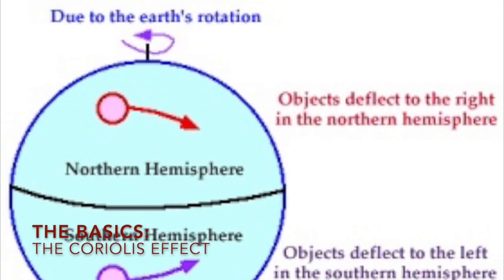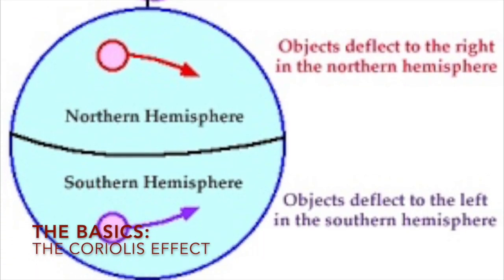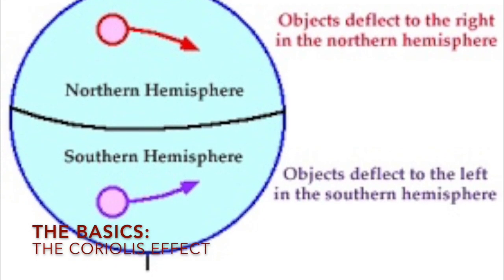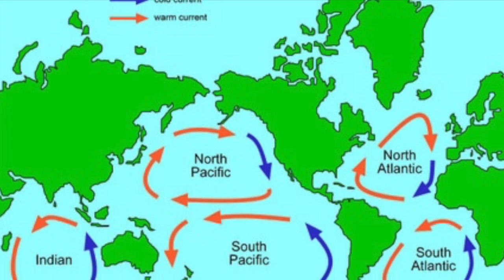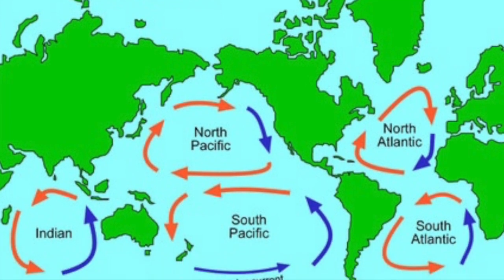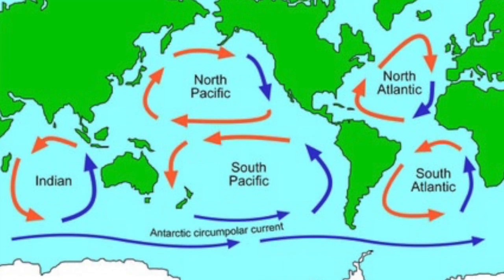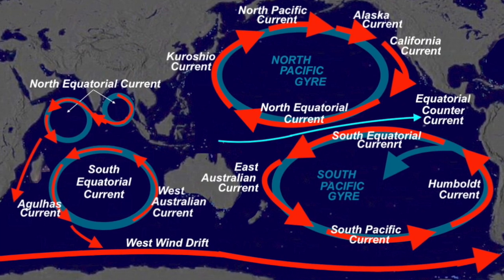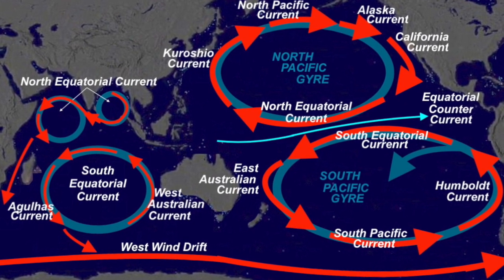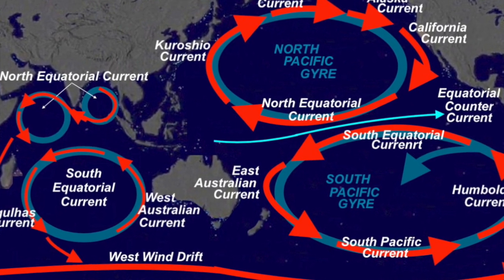The Coriolis effect deflects objects moving on the earth that aren't firmly secured to the ground. This causes ocean currents moving in the northern hemisphere to move clockwise and ocean currents in the southern hemisphere to move counterclockwise.